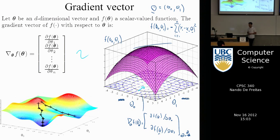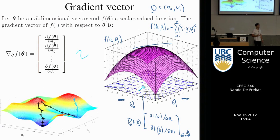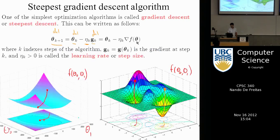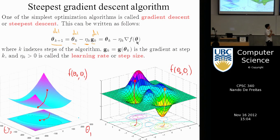The basic idea is: if you start anywhere, learning — in a maximum likelihood sense — is just a process of going down an error function to the minimum. The general algorithm is: the gradient points in the direction of greatest ascent, so if you go in the negative direction — that's why there is a minus — we go in the opposite direction of the gradient.